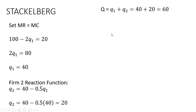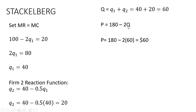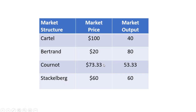Under Stackelberg, total industry output is Q₁ + Q₂ = 40 + 20 = 60 units. The market price is 180 - 2(60) = $60. To sum up the four market structures: Cartel gives P = $100, Q = 40; Bertrand gives P = $20, Q = 80; Cournot gives P ≈ $73.33, Q ≈ 53.33; and Stackelberg gives P = $60, Q = 60. I hope you found this video helpful.